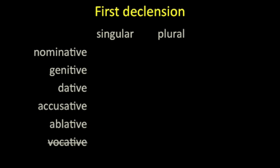Now, these nouns that end in 'a' and follow this pattern are called the first declension, and here is its full paradigm, which you should learn in detail. Note that we're going to drop the vocative, because it's the same as the nominative, and we'll memorize these five forms.